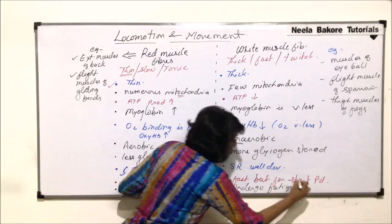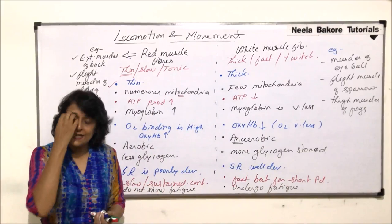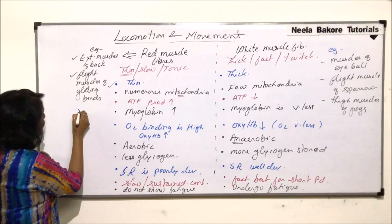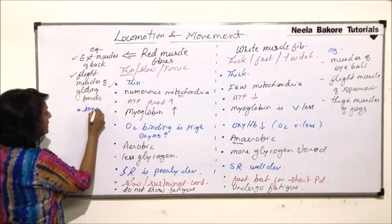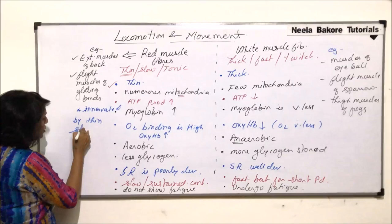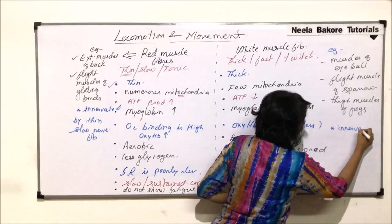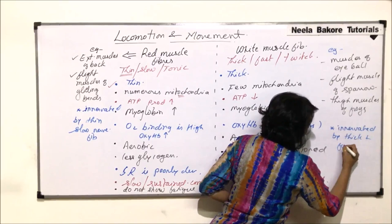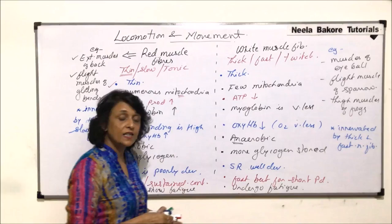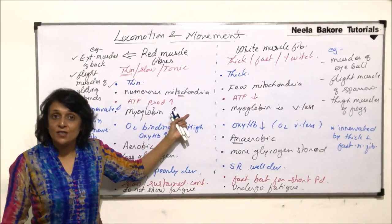One last point of comparison is which nerve fibers supply to these muscle fibers. Red muscle fibers are innervated by thin and slow nerve fibers, whereas white muscle fibers are innervated by thick and fast nerve fibers — meaning the nerve fibers where conduction takes place at a faster pace. So we have these two types of muscles: the red and the white.